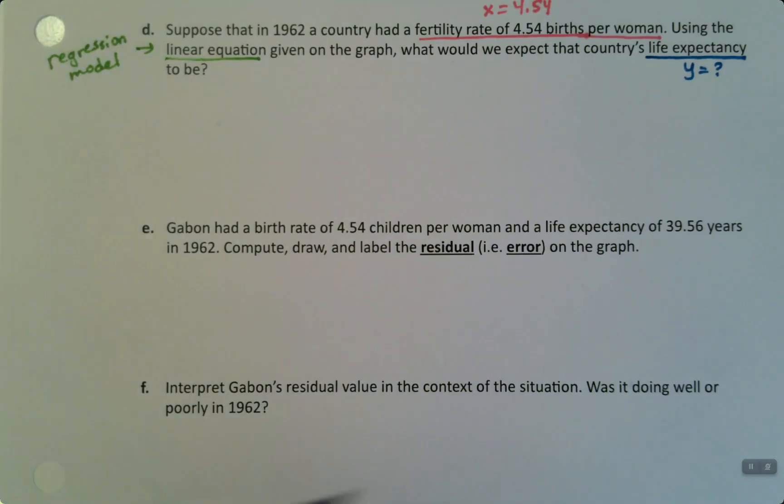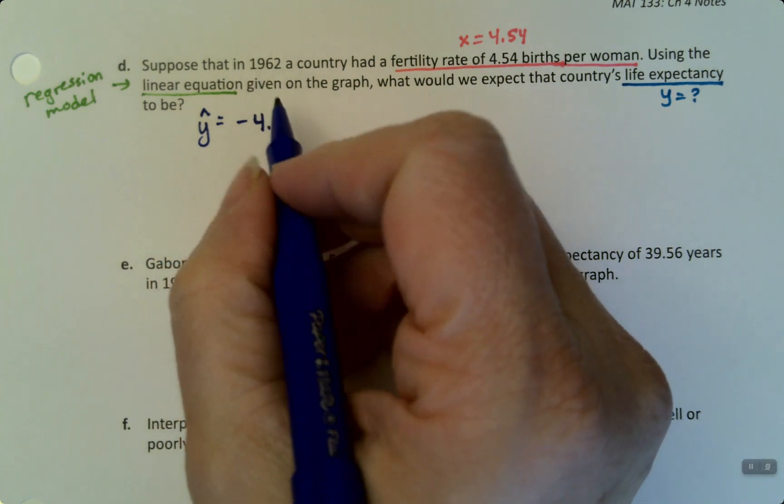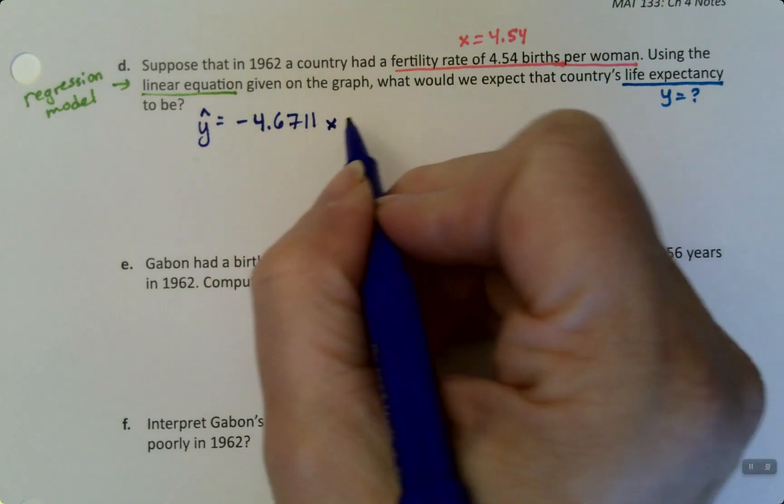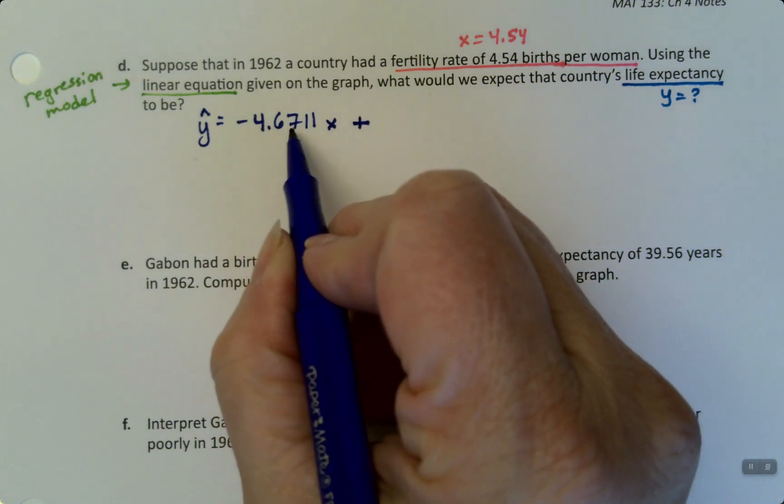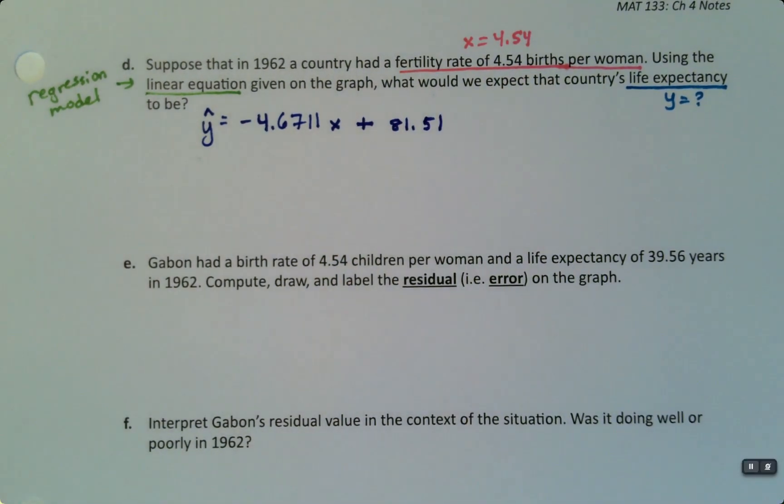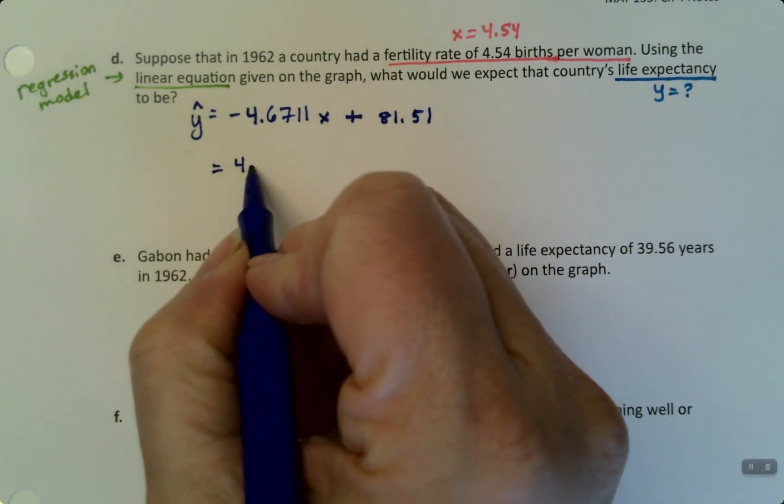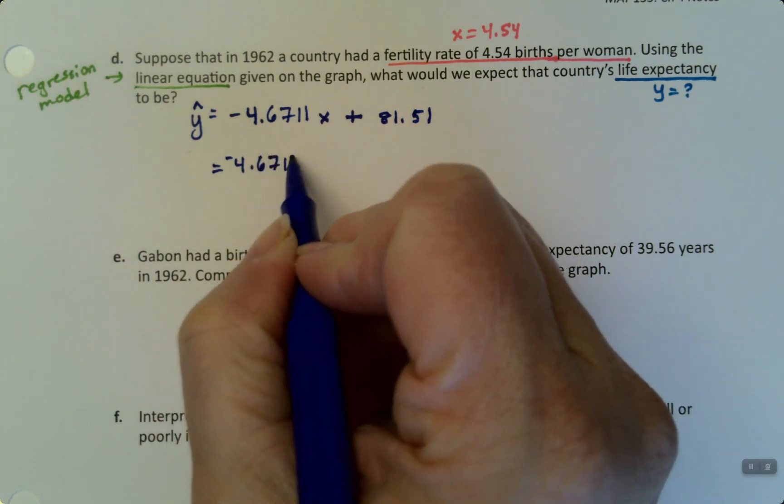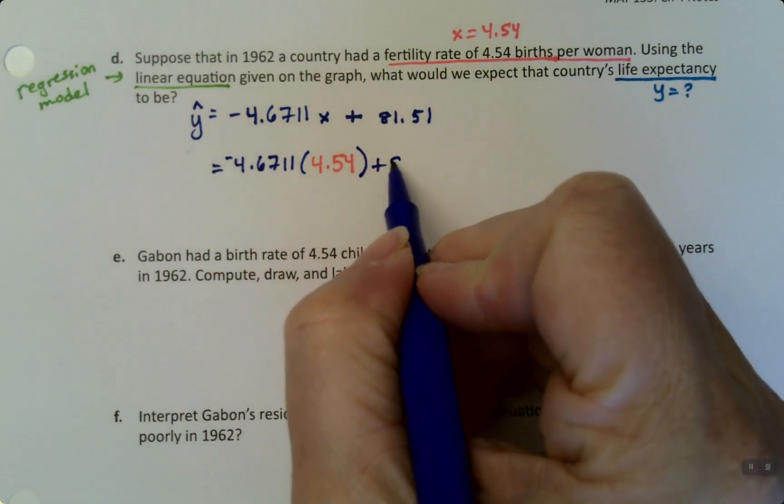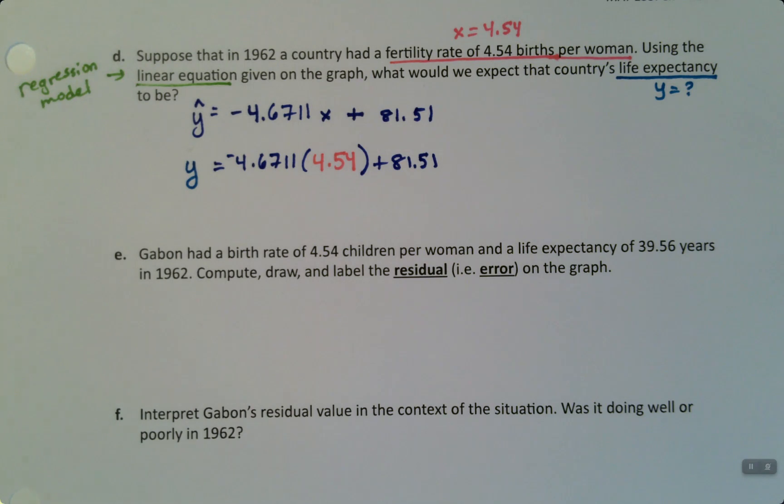So then what would we expect the life expectancy to be? They're asking us, what is y? When we have the equation, the equation was, and I'll just write it this way, y, technically it's with a little hat on it. I couldn't put the hat when I have Excel do this, or actually Google spreadsheet do this. It doesn't put the little hat on it, because that's kind of an esoteric statistics point. So negative 4.6711x plus 81.51.